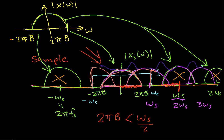And typically, you'll see this expressed as omega s is greater than 2 times 2 pi b. And quite often, you'll see it expressed not in radial frequency, but in terms of just frequency. So if I divide both sides by 2 pi, I get f sub s, which is the sampling frequency, is greater than 2 b.